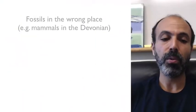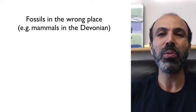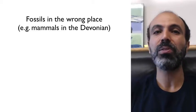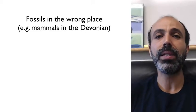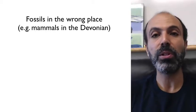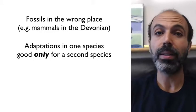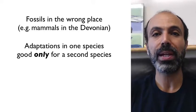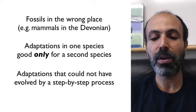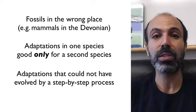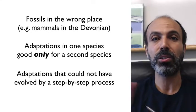Some of you may be thinking: are there any observations that would actually falsify evolution? The answer is yes, there are a few. One of them would be fossils in the wrong place. I mentioned the famous quote from J.B.S. Haldane — fossil rabbits in the Precambrian would certainly falsify the truth of evolution and common ancestry of species. Mammals in the Devonian would do the same. Adaptations in one species that are only good for a second species would definitely not be consistent with evolution by natural selection. Adaptations that could not have evolved in a step-by-step process would also be very difficult to reconcile with evolution by natural selection — I'll show you a proposed case of that in just a second and show you why it's not the case.